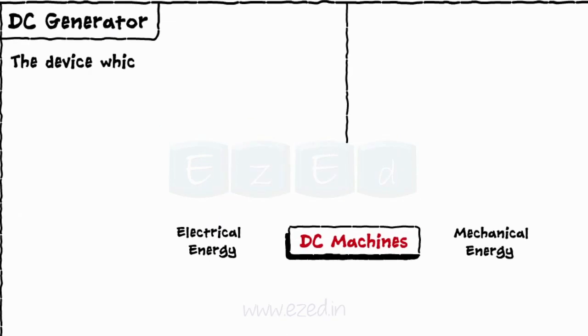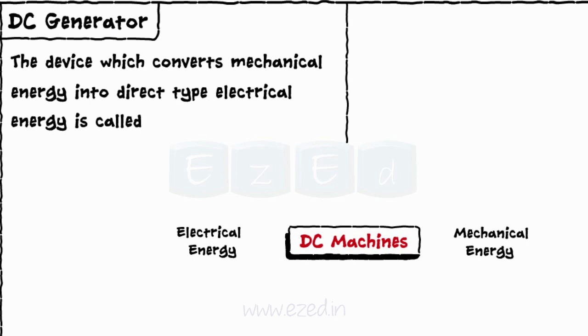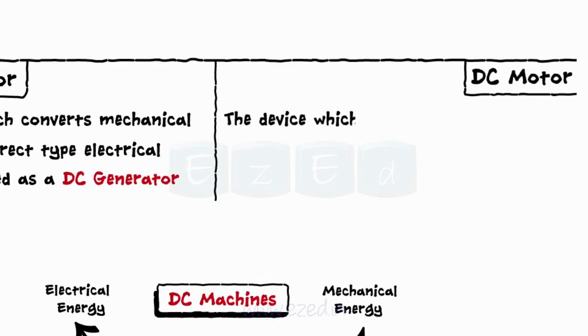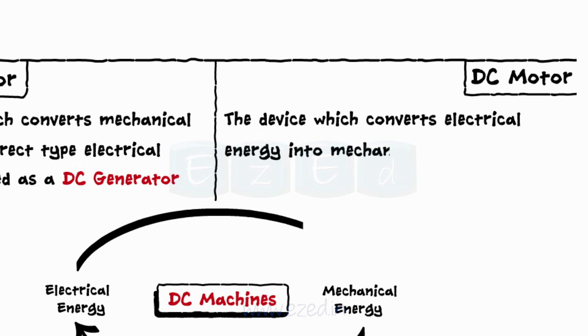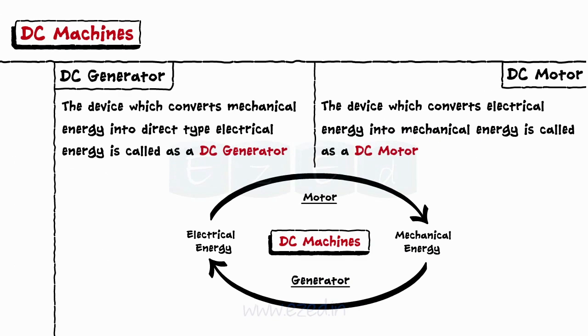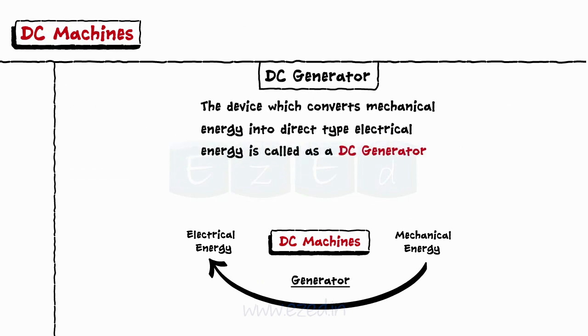The device which converts mechanical energy into direct type electrical energy is called a DC generator. The device which converts electrical energy into mechanical energy is called a DC motor. But now we will only focus on the DC generator.